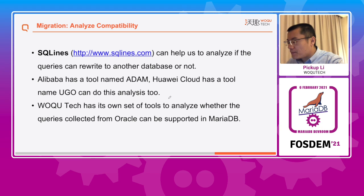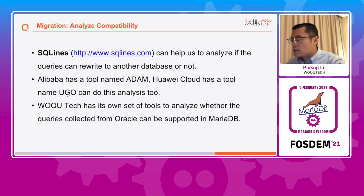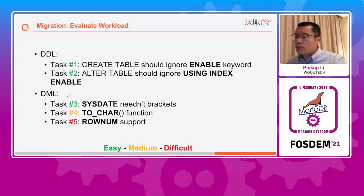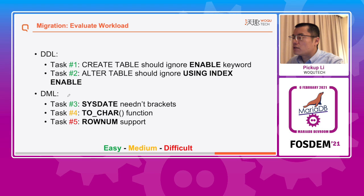We can use SQLName, an open-source migration tool, for analysis. There are similar Oracle-compatibility analysis tools on various clouds, such as Alibaba's ADA and Huawei's tool. Our team has also developed its own set of tools to analyze MariaDB compatibility with Oracle. MariaDB has done lots of Oracle-compatible work, like VARCHAR2 and NUMBER data types, the sequence feature, and many syntax compatibility items like FROM DUAL, Oracle-style CREATE PROCEDURE and functions. Except for what MariaDB has already done, for this case, we still have some compatibility work to do.